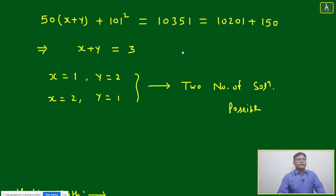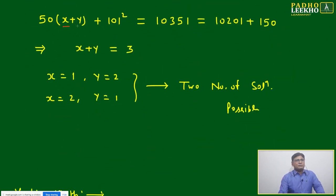50 times x plus 50 times y plus 101 squared equals 10351, which is 10201 plus 150. This is 101 squared - it cancels out. The question becomes easy: x plus y equals 3.